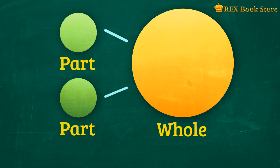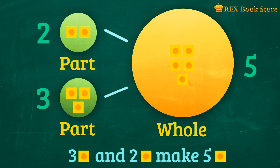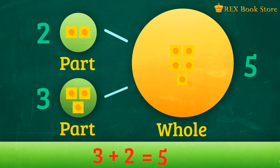So now let's say we have two units here and three units in the other. How many units do we have in the whole? We have five units. Three units and two units make five units. Or three plus two equals five. This is what we call an addition sentence.